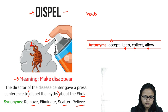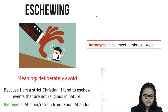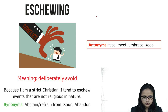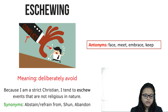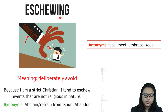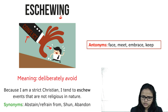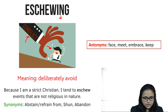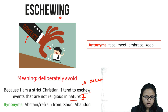The second word is 'eschew.' Eschewing means to avoid something intentionally. Suppose you have a class test and you intentionally skip class because you don't want to take the test. Like this person running away from conflict deliberately because he does not like controversies — he wants to avoid all the bad things in life. When you intentionally avoid something, that is eschewing. Example: 'Because I am a strict Christian, I tend to eschew events that are not religious in nature.'